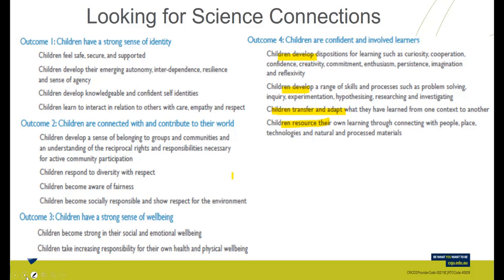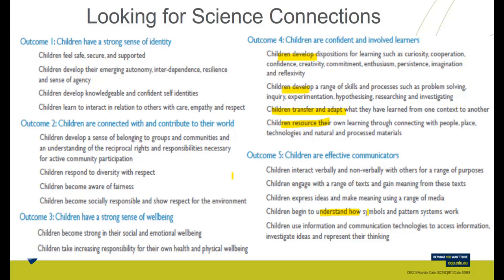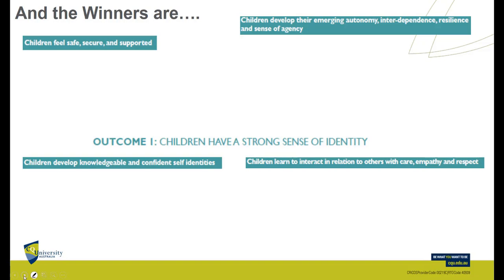Outcome four: they're confident and involved learners, developing and transferring skills — and if we look closely, we can almost see the Five E's underpinning much of this. Under outcome five, we can see the science implications: symbols and patterns, ideas, making meaning using a range of media and data, children engaging with a range of texts — including visual, artistic, creative, and modelling strategies.